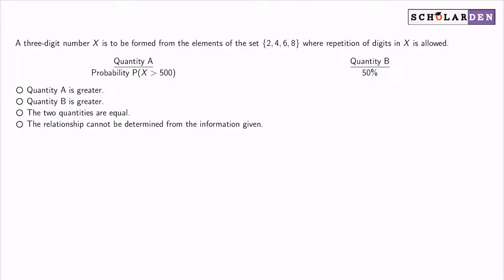A three-digit number X is to be formed from the elements of the set 2, 4, 6, 8, where repetition of digits in X is allowed.